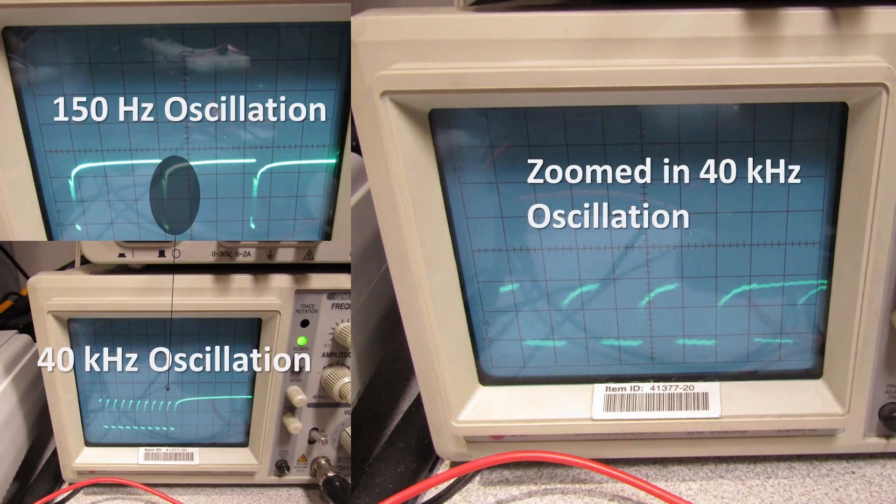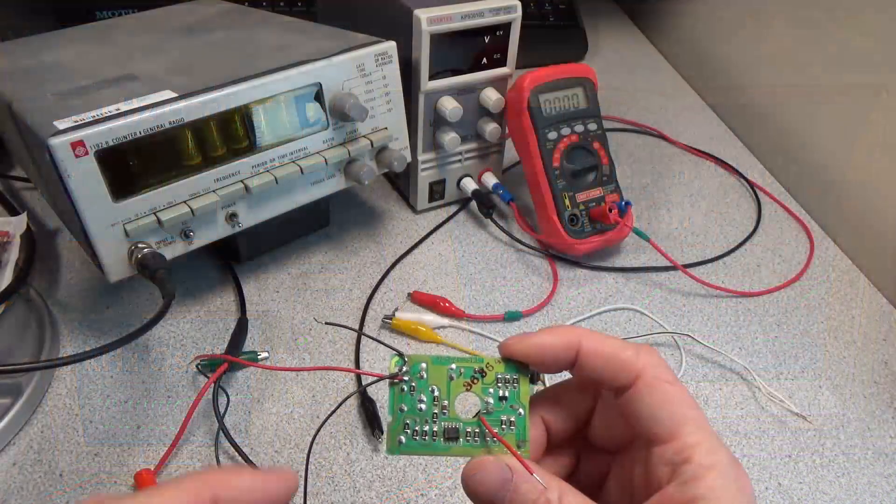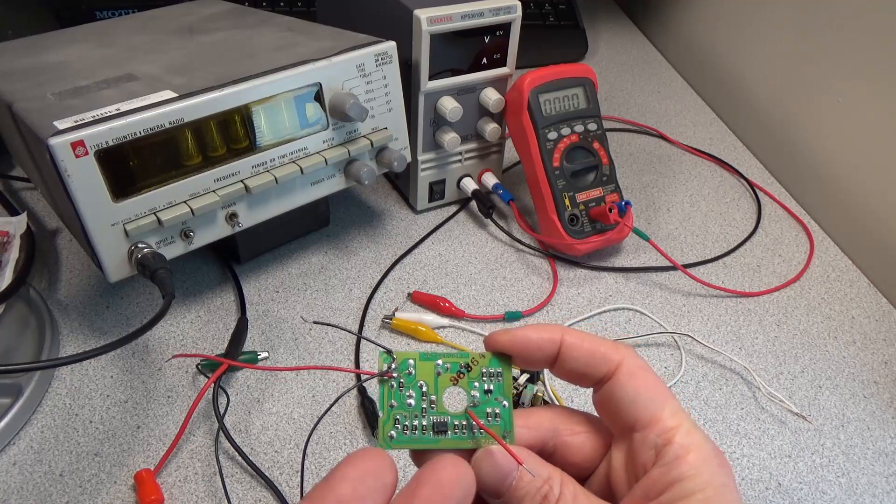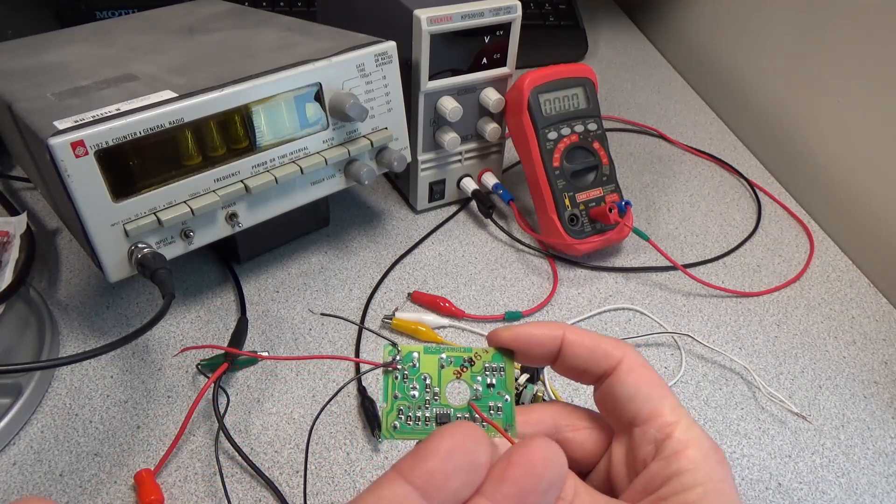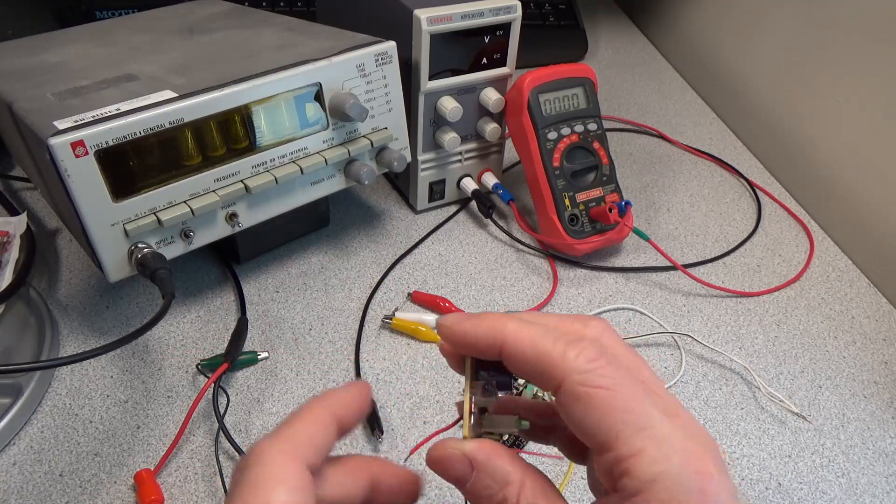When we look at the scope capture, we see a primary oscillation at 150 hertz, which is what we saw on our frequency counter. But when we zoom in, the line is kind of wide. When we zoom in further, we see it's actually oscillating around 40 kilohertz. This has two oscillators - one at 40 kilohertz and one at 150 hertz - and both are being sent out through this infrared LED.